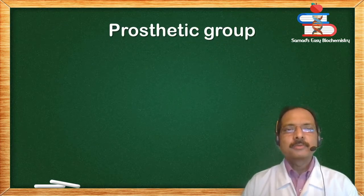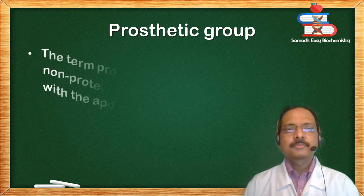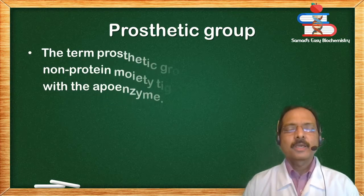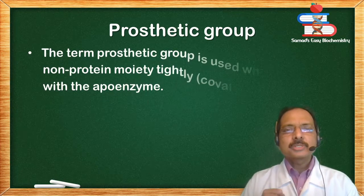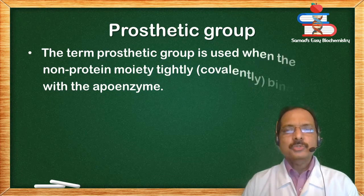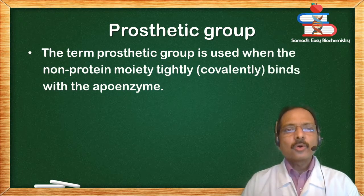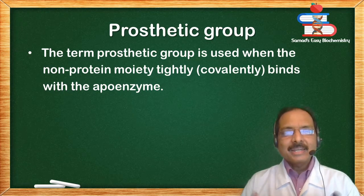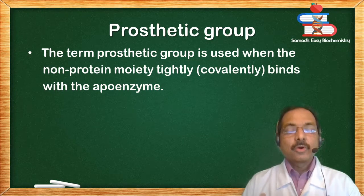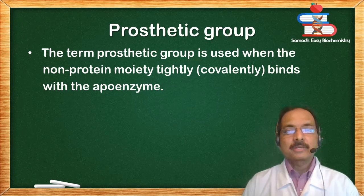Prosthetic group: the term prosthetic group is used when the non-protein moiety tightly or covalently binds with the apoenzyme.